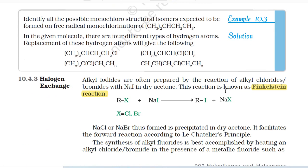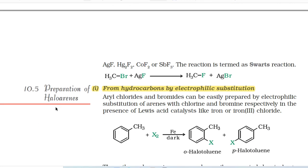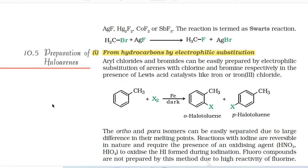10.4.3 Halogen Exchange. Alkyl iodides are often prepared by the reaction of alkyl chlorides or bromides with NaI in dry acetone. This reaction is known as the Finkelstein reaction. RX + NaI → RI + NaX. NaCl or NaBr thus formed is precipitated in dry acetone, facilitating the forward reaction according to Le Chatelier's principle. The synthesis of alkyl fluorides is best accomplished by heating an alkyl chloride or bromide in the presence of a metallic fluoride such as AgF, Hg2F2, CoF2, or SbF3. This reaction is termed the Swarts reaction. CH3Br + AgF → CH3F + AgBr.